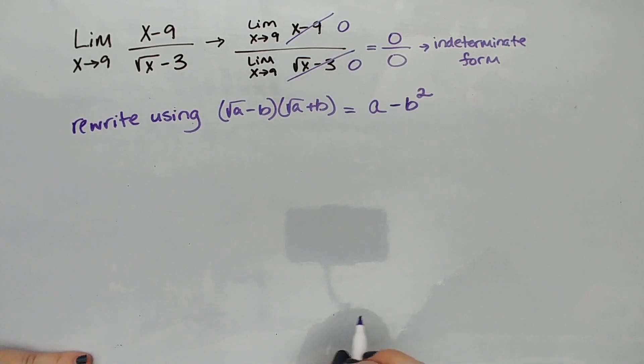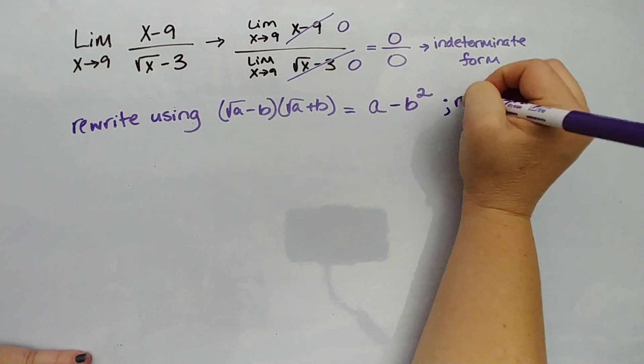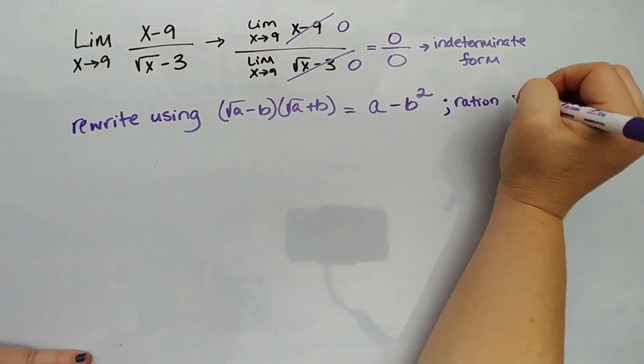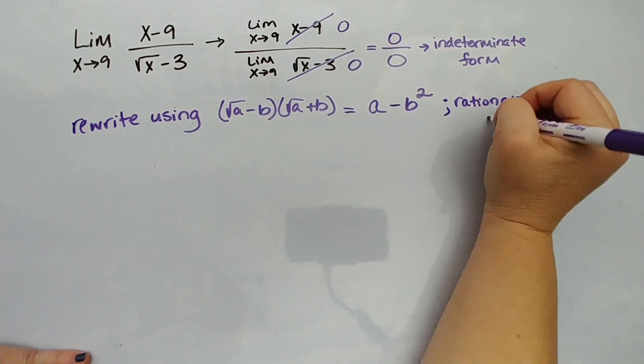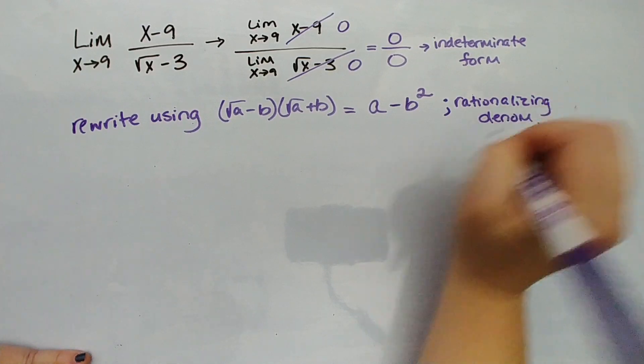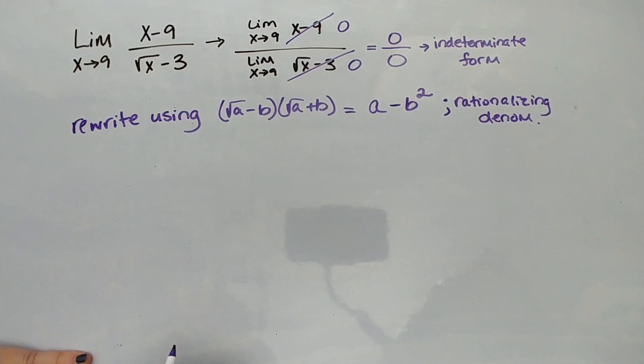When we do this, it is called rationalizing the denominator. So let's rewrite this thing. (x-9) over (√x - 3), we're going to multiply by (√x + 3) over (√x + 3).